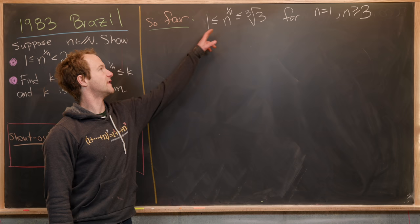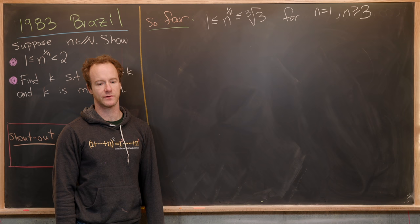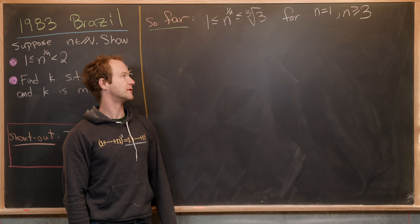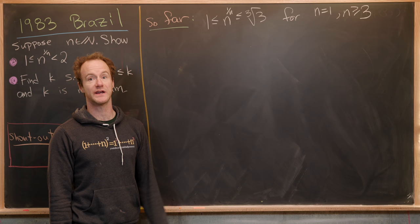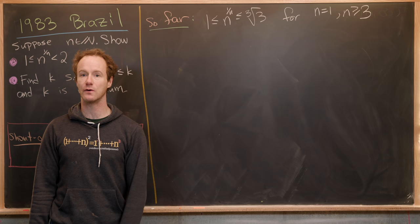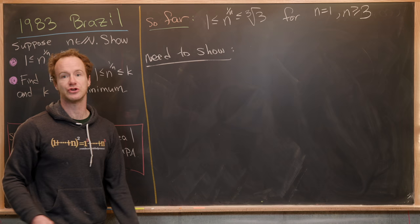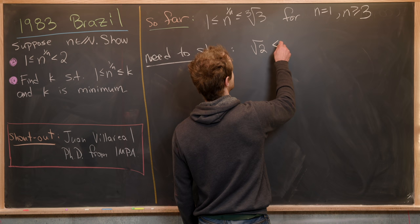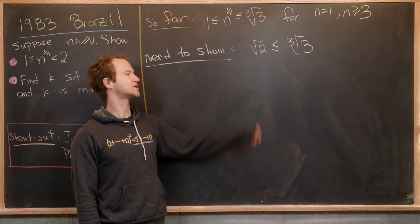So far we've proven that n^(1/n) is between 1 and the cube root of 3 for n = 1 and for n ≥ 3, which means we do achieve the value of the cube root of 3 at n = 3. So perhaps our value of k is the cube root of 3, but the only way to be sure is to check the outstanding case n = 2. We need to show that 2^(1/2), the square root of 2, is less than or equal to 3^(1/3), the cube root of 3.